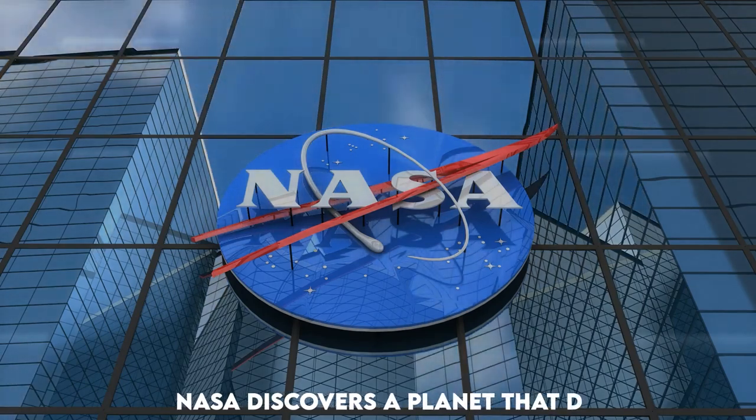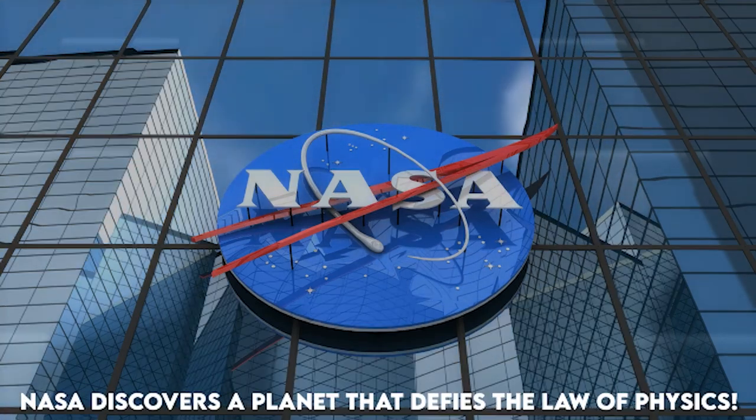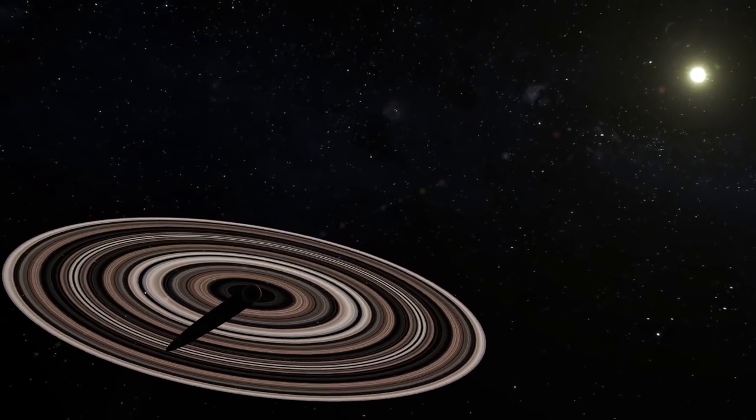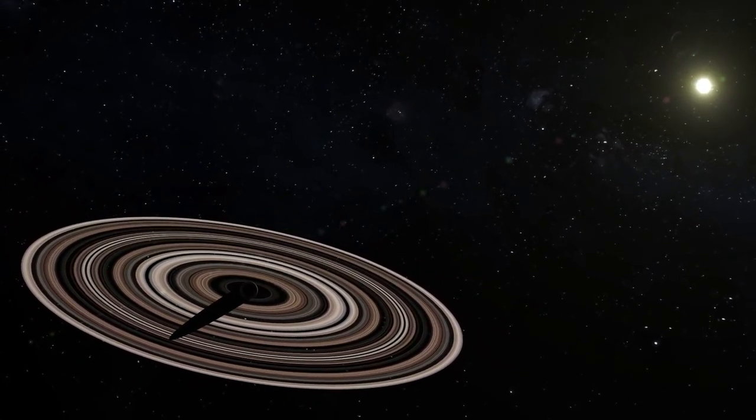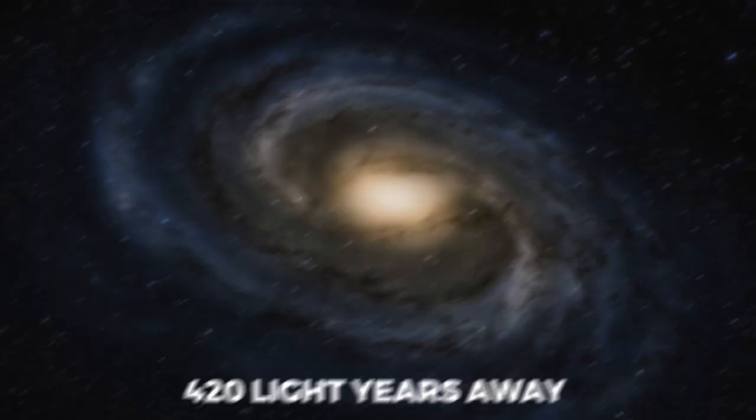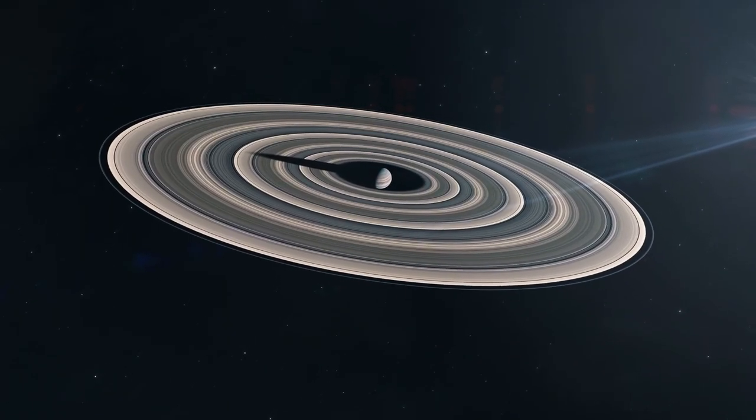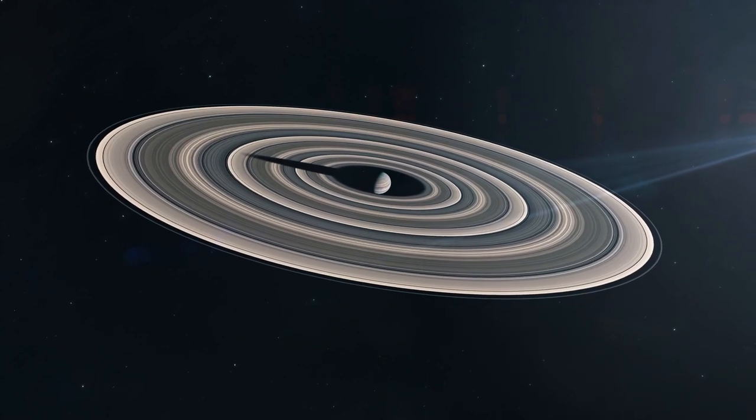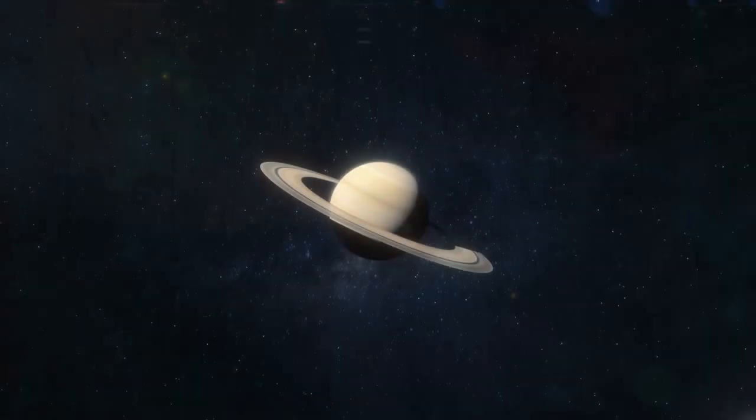NASA discovers a planet that defies the law of physics. A young planet orbiting a young star, similar to our sun, is located in our galaxy around 420 light-years away. Similar to Saturn, this planet has rings, but the size of the rings is actually massive, unlike Saturn.